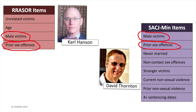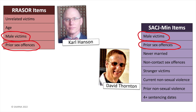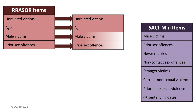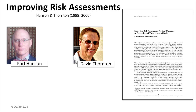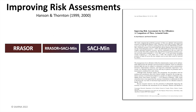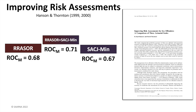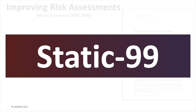Legend has it that Hansen and Thornton discussed their two tools at an annual ATSA conference. They wondered what would happen if you combined the two — retain the shared items and add unique items from each scale. Through a comparison of the three scales, they found that the combined scale was better. They called this scale Static-99.